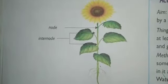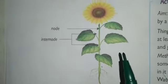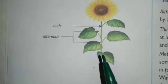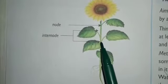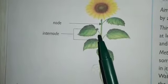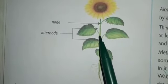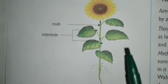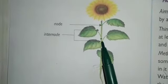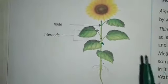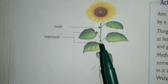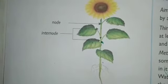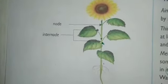The point from where a leaf or a branch arises — here and here, the leaf or a branch is arising — this region is called a node. So, the leaf or branch arising region of a plant is called a node.